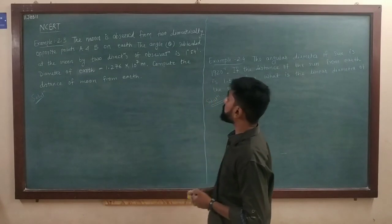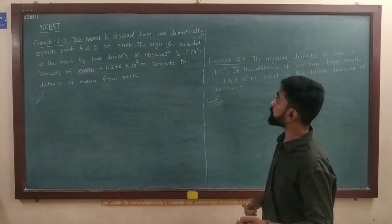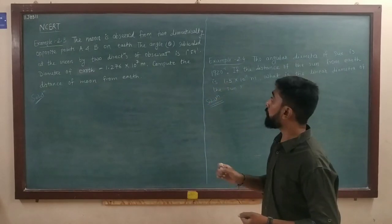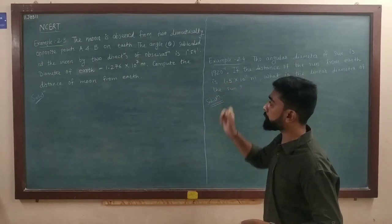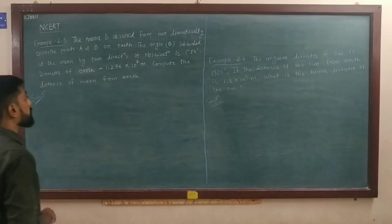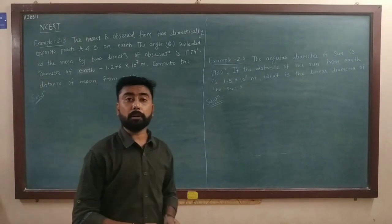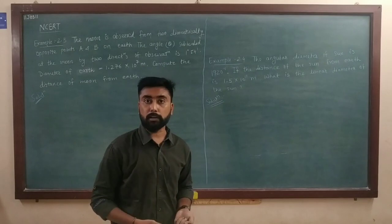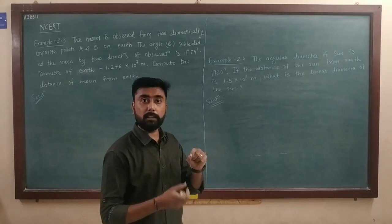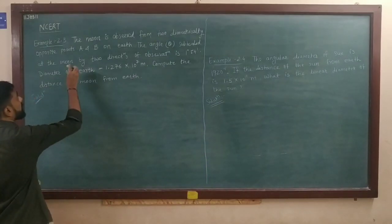Example 2.3: The moon is observed from two diametrically opposite points A and B on Earth. The angle theta subtended at the moon by the two directions of observation is 1 degree 54 minutes. The diameter of Earth is given as 1.276 into 10 to the 7 meters. Compute the distance of the moon from the Earth. In this numerical we will use the parallax method.